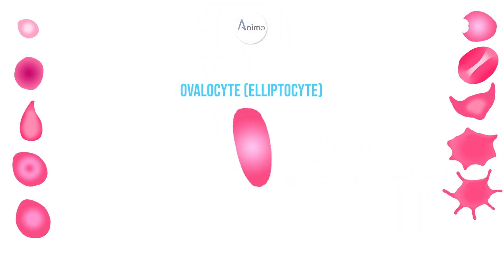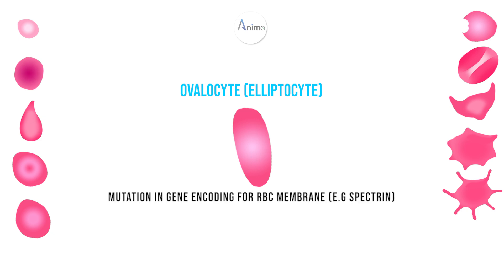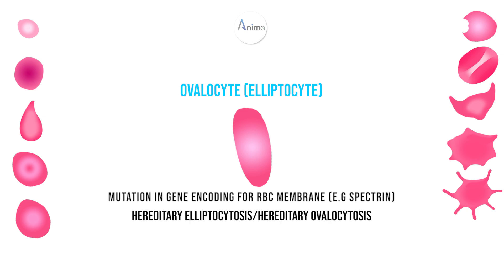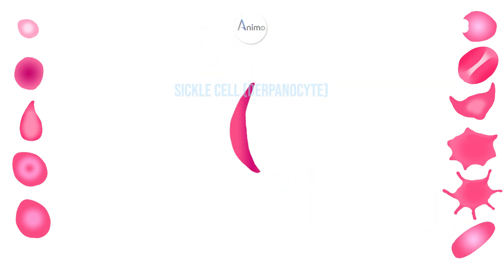The next one is ovalocyte, also called elliptocyte, due to its elliptical shape. It is formed due to a mutation in the gene encoding for the RBC membrane, such as spectrin. So it is found in hereditary elliptocytosis or hereditary ovalocytosis.